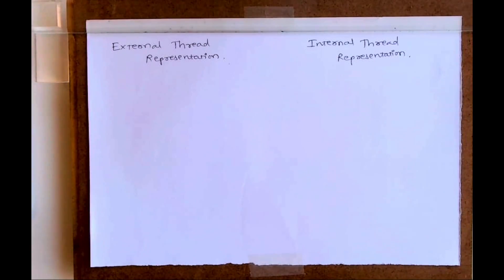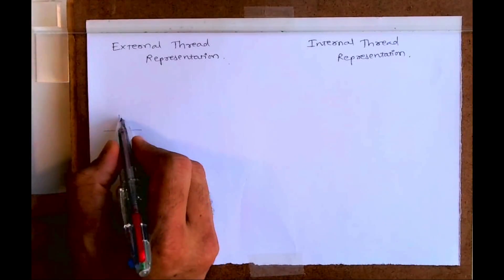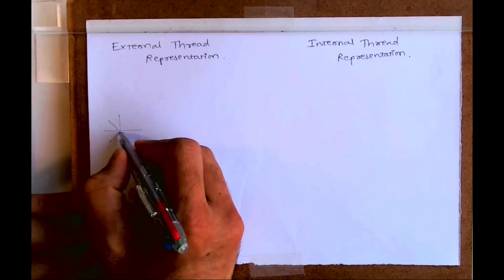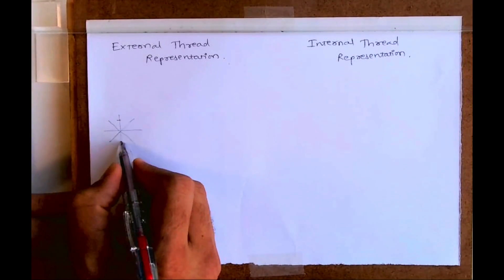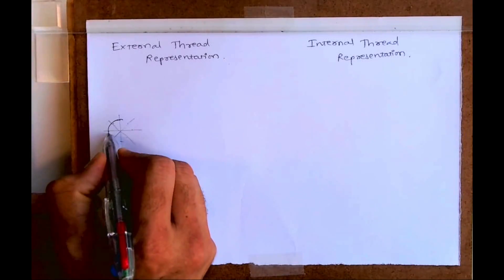Welcome to technical drawing. Today we're going to learn about external thread and internal thread representation. First, I will draw a circle. When you're drawing external thread, the outer circle will be dark and the inner one will be three-fourths.